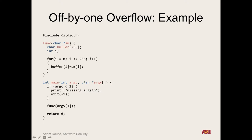Can we overwrite the whole saved base pointer? No — because a character is only 8 bits wide, one byte. So on this final write, buffer bracket 256 goes to buffer plus 256 and overwrites just that one byte — the least significant byte of the saved EBP. So we cannot overwrite the instruction pointer; we're only overwriting the base pointer.